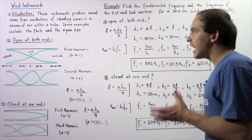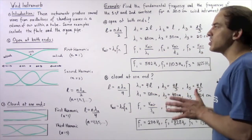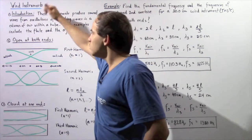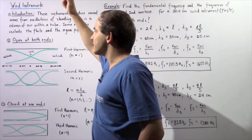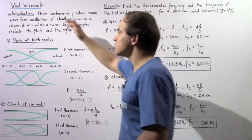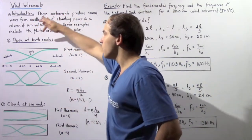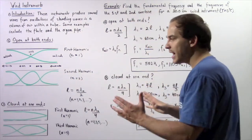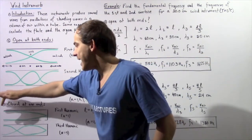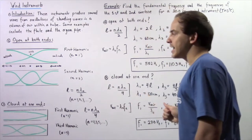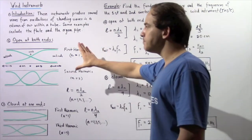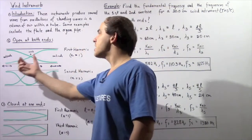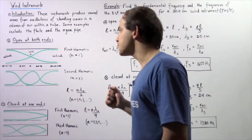There are two types of wind instruments we're going to talk about. One wind instrument contains a pipe that is open at both ends, and the second type contains a pipe that is open at one end and closed at the other end. Let's begin our discussion by looking at the pipe that is open at both ends.